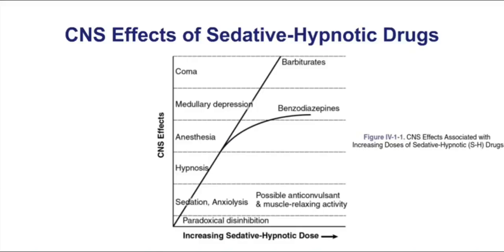If I increase the dose even further, I can get an anesthetic effect from these drugs. But you'll notice at those anesthetic doses, that's where the curves diverge. The curve for the benzodiazepines begins to flatten out, whereas the curve for the barbiturates continues to rise very steeply. This points out one of the distinct advantages of a benzodiazepine over a barbiturate. Benzodiazepines are a safer group of drugs because of this flatter dose-response curve. What it means on overdose is that if I overdose on a benzo, I'm likely to get some minor medullary depression.